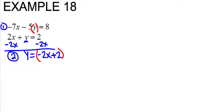I'm going to rewrite the top equation. Negative 7x minus 5y equals 8. And everywhere I see y, I'm going to put parentheses for now so I know where to plug in my value. So what y equals is negative 2x plus 2. So that's what I'm plugging in.